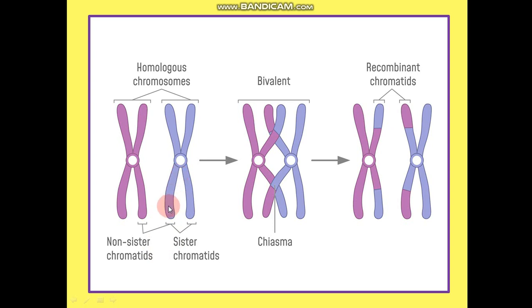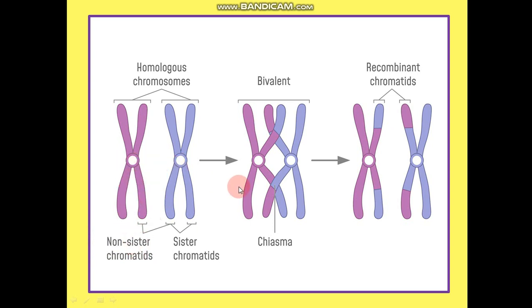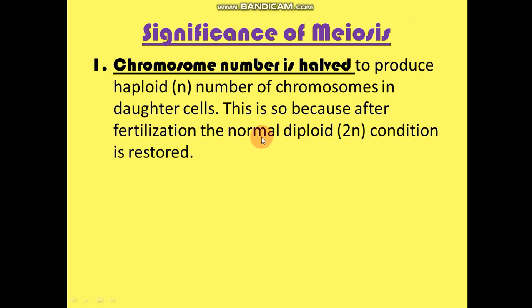To repeat this important point: for the blue chromosome, the two blue chromatids are sister chromatids to each other because they are attached by the centromere. Whereas the pink chromatid in respect to the blue one — they are non-sister chromatids because they are not joined by a centromere.